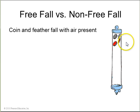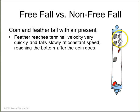A coin and a feather fall, or they're both dropped from rest, and fall through this column of air. The feather reaches its terminal velocity very quickly, and it falls at a constant speed, reaching the bottom after the coin does.